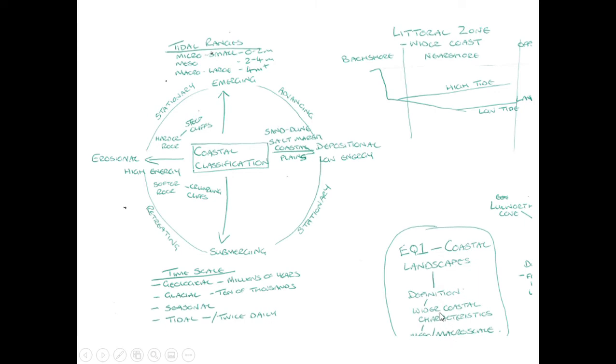First of all, we're looking at coastal classification. It's easy to see on the Valentin model here how the different coastal classifications are at different ends of the spectrum. So we can have the erosional coastlines, which tend to be higher energy. And when you have softer rock, it could lead to crumbling cliffs, the retreating coastline. If we have a harder rock, we may find steeper cliffs on a more stationary coastline. On the other side of that, in a low energy area, we can get more depositional landforms, the coastal plains where we may find features such as sand dunes and salt marshes.